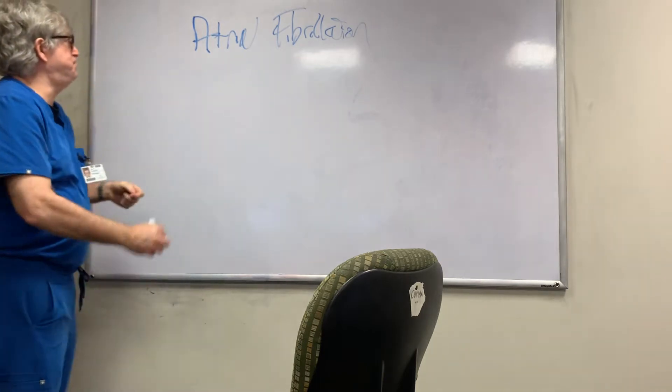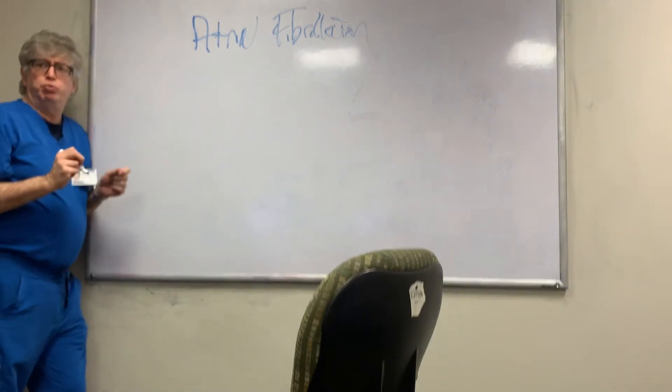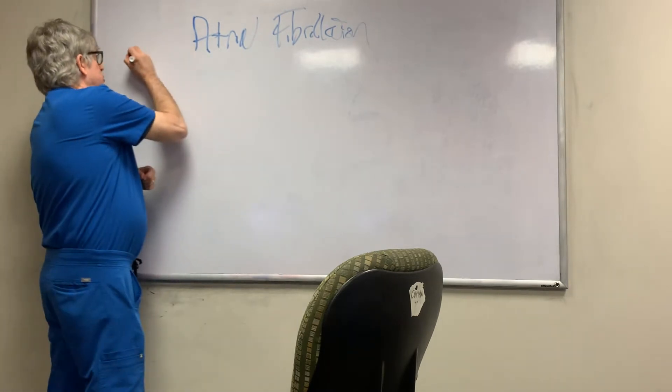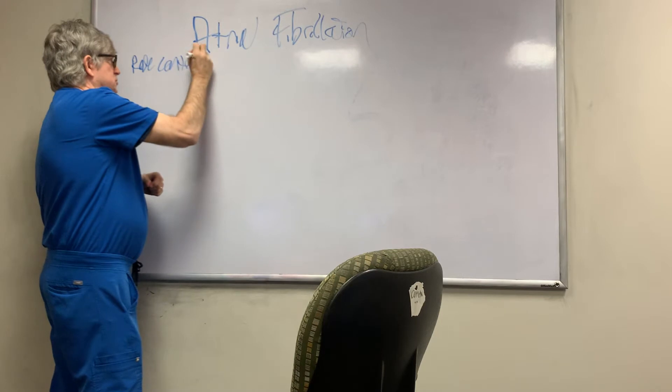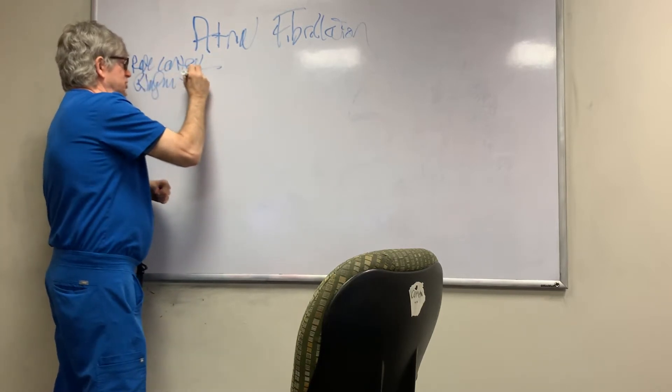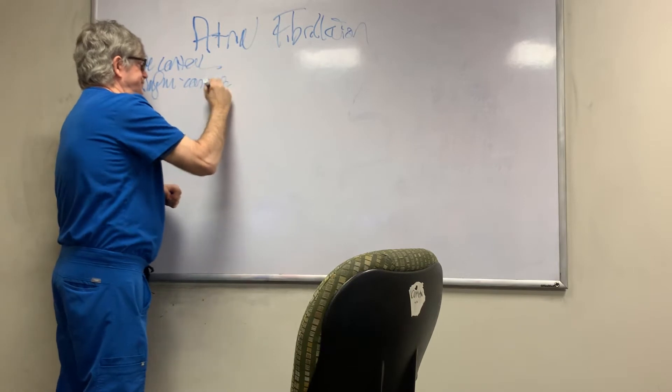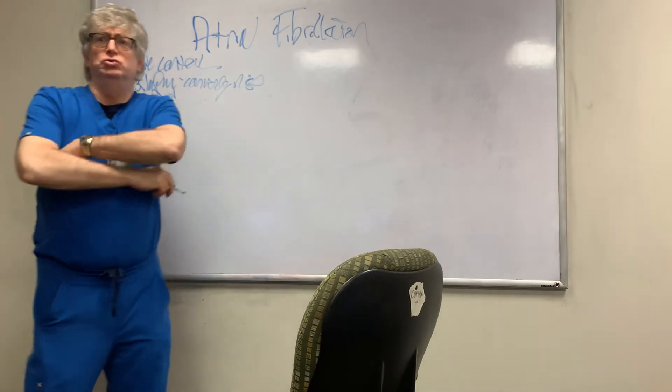So basically, with atrial fibrillation, there are three main issues: rate control, rhythm, converting to normal sinus rhythm, and anticoagulation. These are the three major goals.